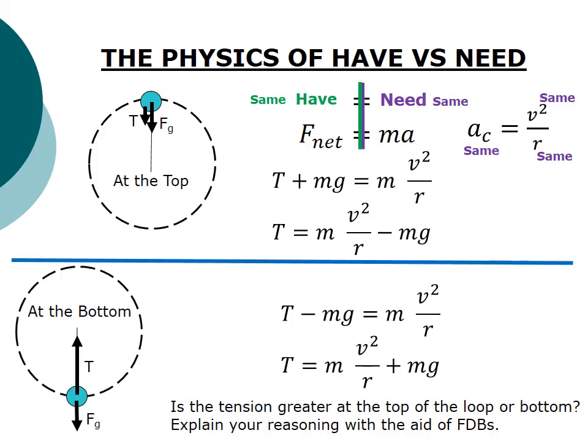So from here, we can see, here I had tension, and then I subtracted a value to get the resulting net force I need. Over here, I have tension, and I'm adding something. They're working together. Tension is a lot lighter at the top. It doesn't need to work as hard because force of gravity is working with it. These are common examples of vertical circle problems.